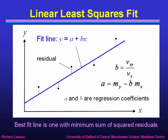Going through the mathematics, the value of b is determined by Vxy — the covariance of x and y — divided by Vx, the variance of x. Once you've determined b, it's easy to determine a, because if y = a + bx, you can see that a must be my minus b·mx, because the line has to go through the mean point (mx, my). a and b are known as the regression coefficients — the slope and intercept of that least squares fit line. Mathematically, you find the fit line by calculating the variance of x and the covariance of x and y.